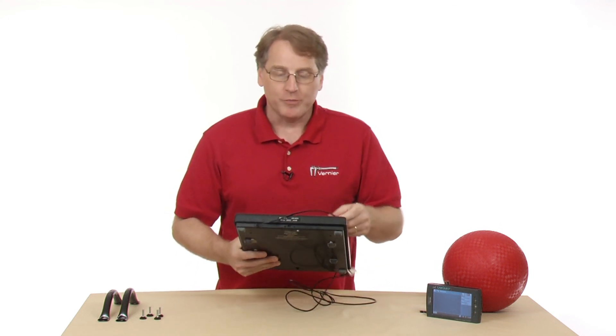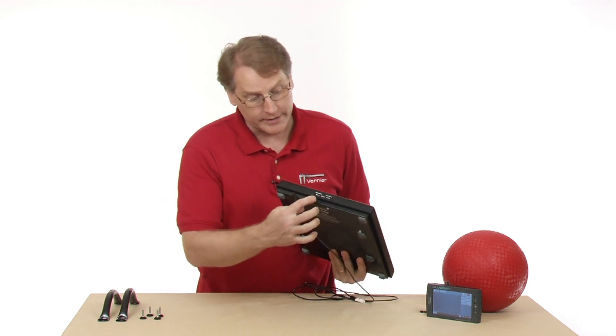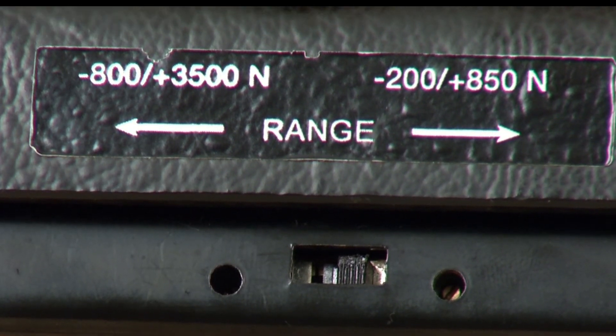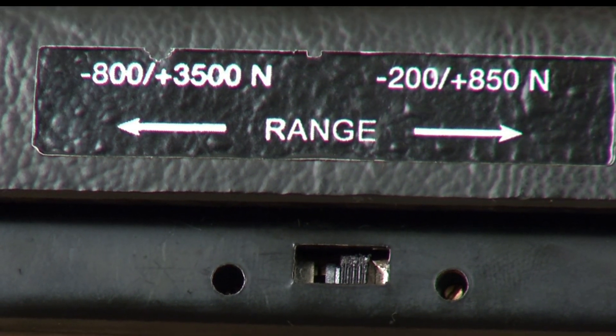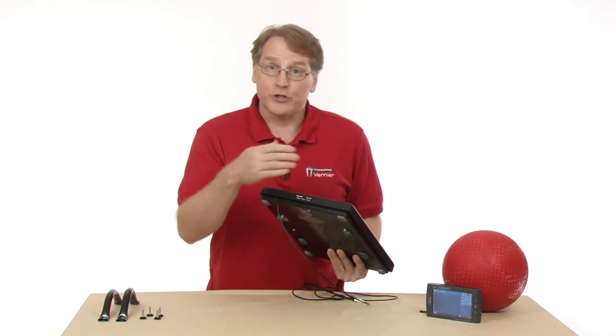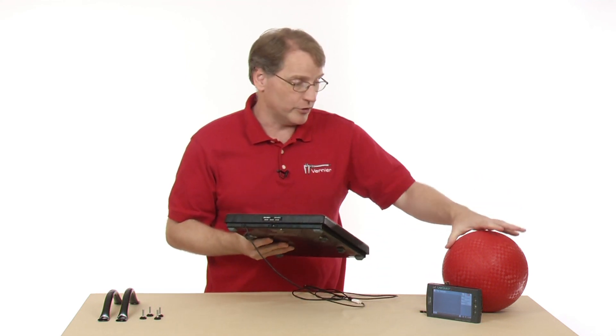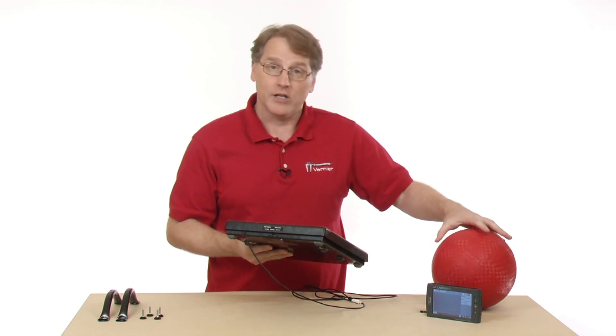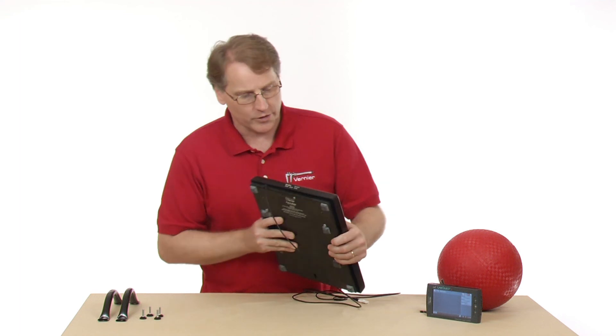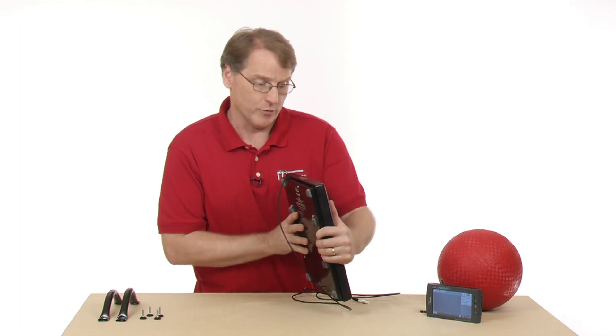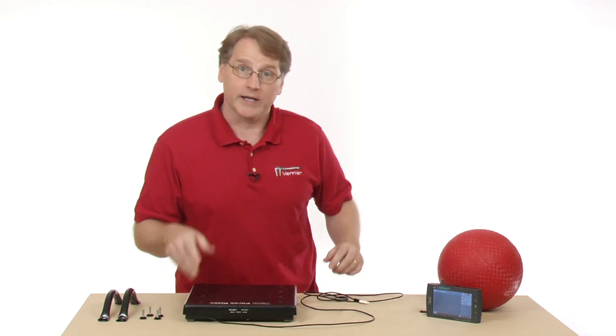One thing about the force plate is that it's a dual range sensor. There is a sensitivity switch here that allows you to determine how sensitive you want the device to be. If you're going to jump up and down on it, you may want it on one setting. If you're going to do something like I'm going to do and drop the ball on it, so it's a lot less massive, then I might want to have it on a more sensitive setting. I've got mine set on the more sensitive setting, and I'm now ready to do my collection.